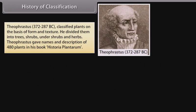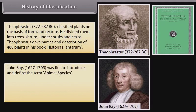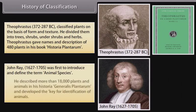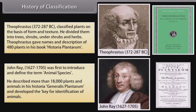Theophrastus (372–287 BC) classified plants on the basis of form and texture. He divided them into trees, shrubs, undershrubs, and herbs. Theophrastus gave names and descriptions of 480 plants in his book Historia Plantarum. John Ray (1627–1705) was the first to introduce and define the term 'animal species.' He described more than 18,000 plants and animals in his Historia Generalis Plantarum and developed the key for identification of animals.